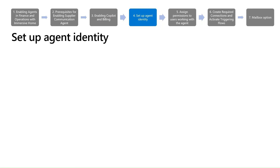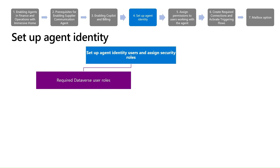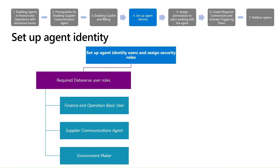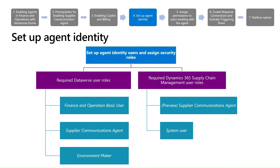There are three types of users. The first is the agent identity user, which enables the supplier communication agent to interact with Dataverse, Microsoft Copilot Studio, and Dynamics 365 Supply Chain Management. Setting up the agent starts with creating a dedicated agent identity that securely interacts with both Dataverse and Copilot Studio. For best security and easier maintenance, use a separate dedicated identity. Assign specific security roles in both Dataverse and Dynamics 365 Supply Chain Management. In Dataverse: Finance and Operations Basic User, Supply Communication Agent, and Environment Maker. In Dynamics 365 Supply Chain Management: System User and Preview Supplier Communication Agent. Assigning these roles ensures the agent has the right permissions to function correctly across platforms.